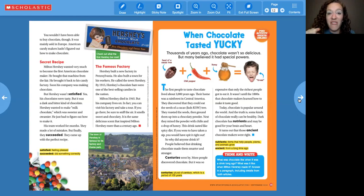The famous factory. So I know this next section is all going to be about the famous factory. Hershey built a new factory in Pennsylvania. He also built a town for his workers. He called the town Hershey. By 1915, Hershey's chocolate bars were one of the best selling candies in the nation. Milton Hershey died in 1945, but his company lives on. In fact, you can visit his factory and take a tour. If you go there, be sure to sniff the air. It smells sweet and chocolatey. It is the same delicious scent that inspired Milton Hershey more than a century ago.